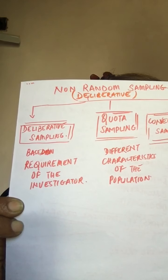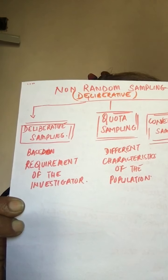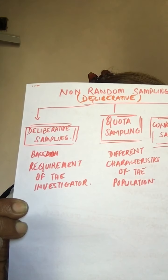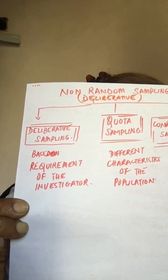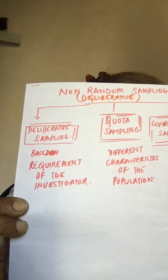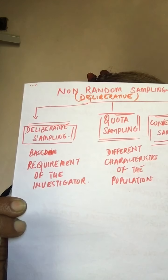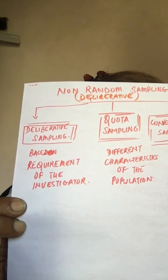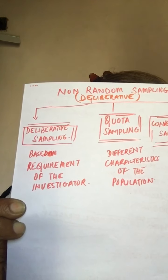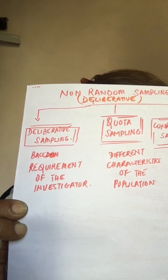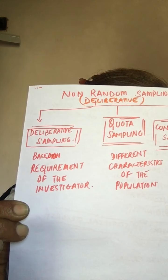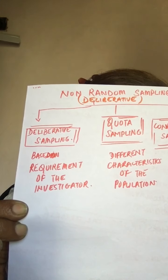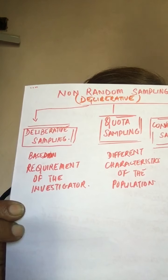Deliberative sampling is judgmental or purposive sampling. In this, the sample is taken out from the universe according to the requirement of the investigator. The investigator selects those units which he thinks are fully representative of the universe.